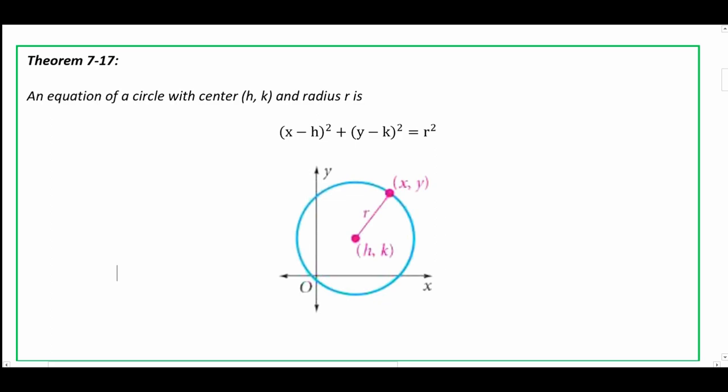If we take a look at the diagram of the circle, we have the center located here and a point on the circle labeled (x, y). This formula for the circle was derived using the Pythagorean theorem. Taking this line and these two points, it forms a right triangle, giving us r² using the distance formula. That's how we actually get it.